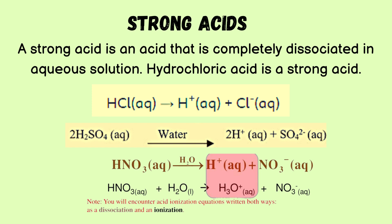A strong acid is an acid that is completely dissociated in aqueous solution. Hydrochloric acid is a strong acid — it completely dissociates to form H⁺ and Cl⁻ ions. H₂SO₄ gives H⁺ and SO₄²⁻ ions. HNO₃ gives H⁺ and NO₃⁻ ions.